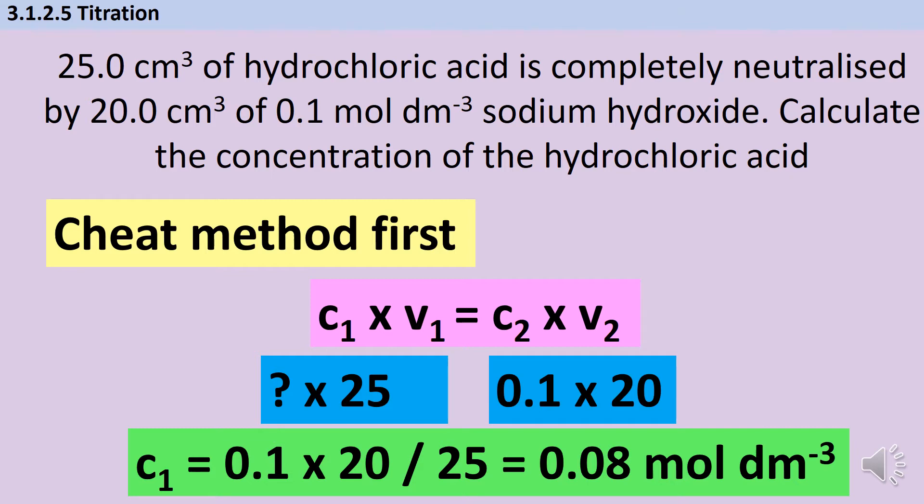If I do a common sense check here, this is about the same order of magnitude as the concentration of my sodium hydroxide, which is 0.1, but it's slightly less, which makes sense because I've got slightly more hydrochloric acid. So if it took me a slightly bigger volume, it's probably because the concentration is slightly lower. Now this answer is correct, but this method won't work for every question, and so we're going to look at why.